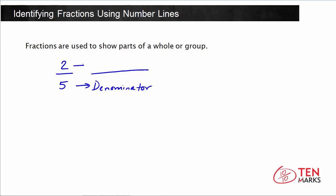The top number is called the numerator, and it tells you how many of the equal parts are being used. That means the fraction 2 fifths is a whole that has been divided into five equal parts — because that's the denominator — and two of those parts are being used.